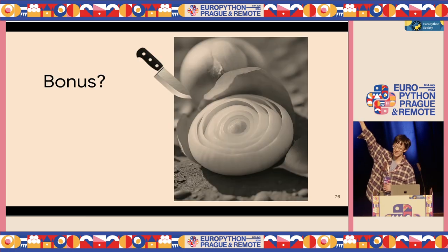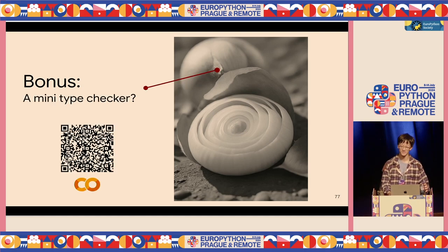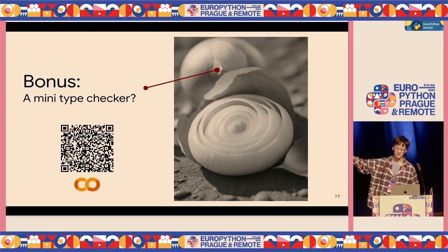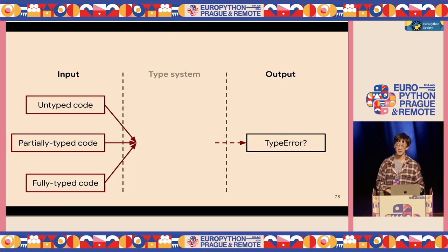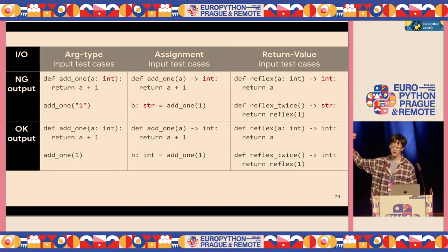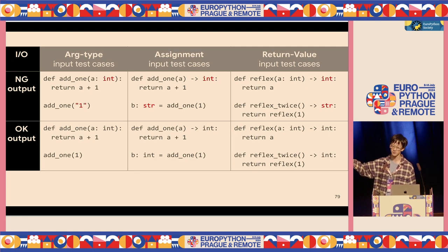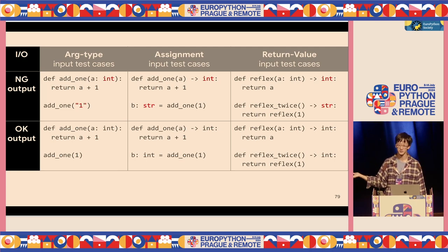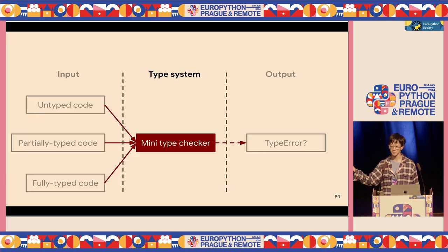As a bonus, you can try to implement your own mini type checker to understand type checkers better. The implementation concept is simple: you plan a system to check types. Your input is untyped code, partially typed code, and fully typed code. Your output is type errors. You can try examples: argument type errors, assignment type errors, and return value type errors — deliberately inputting invalid things to verify your system reports the issue.